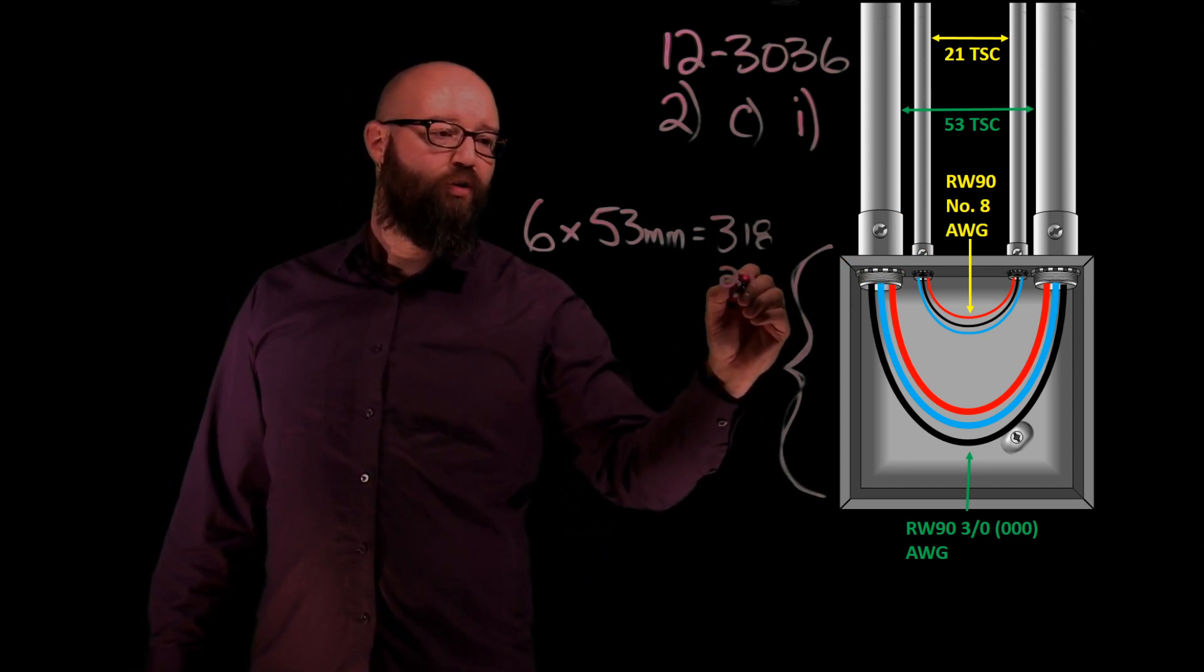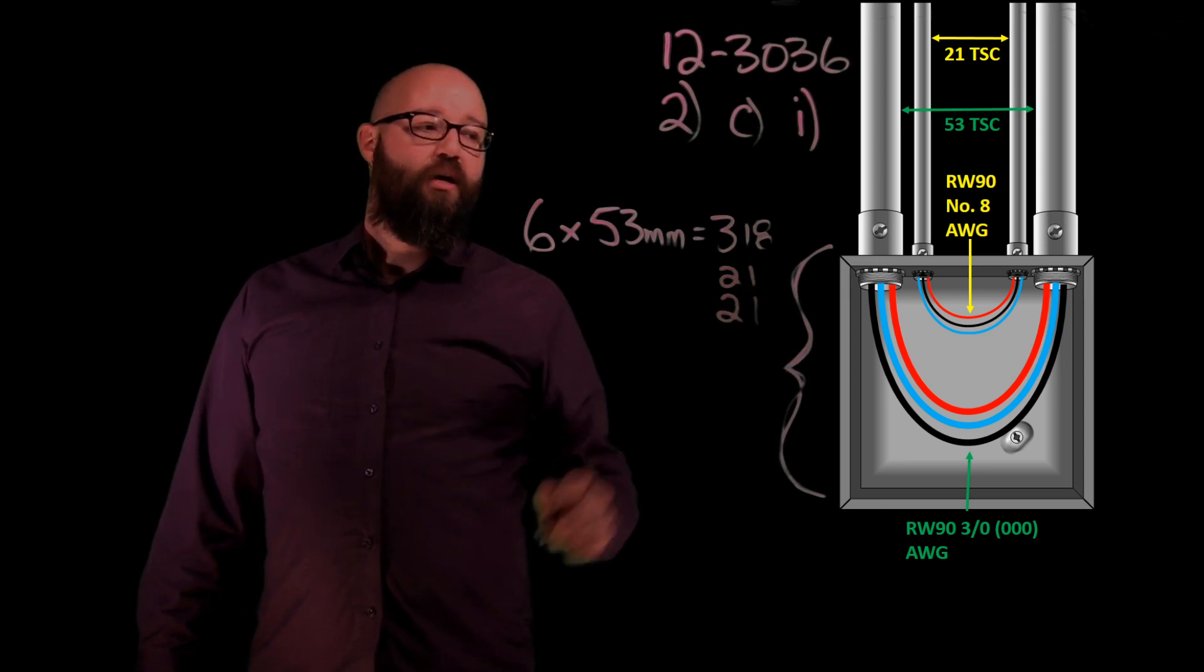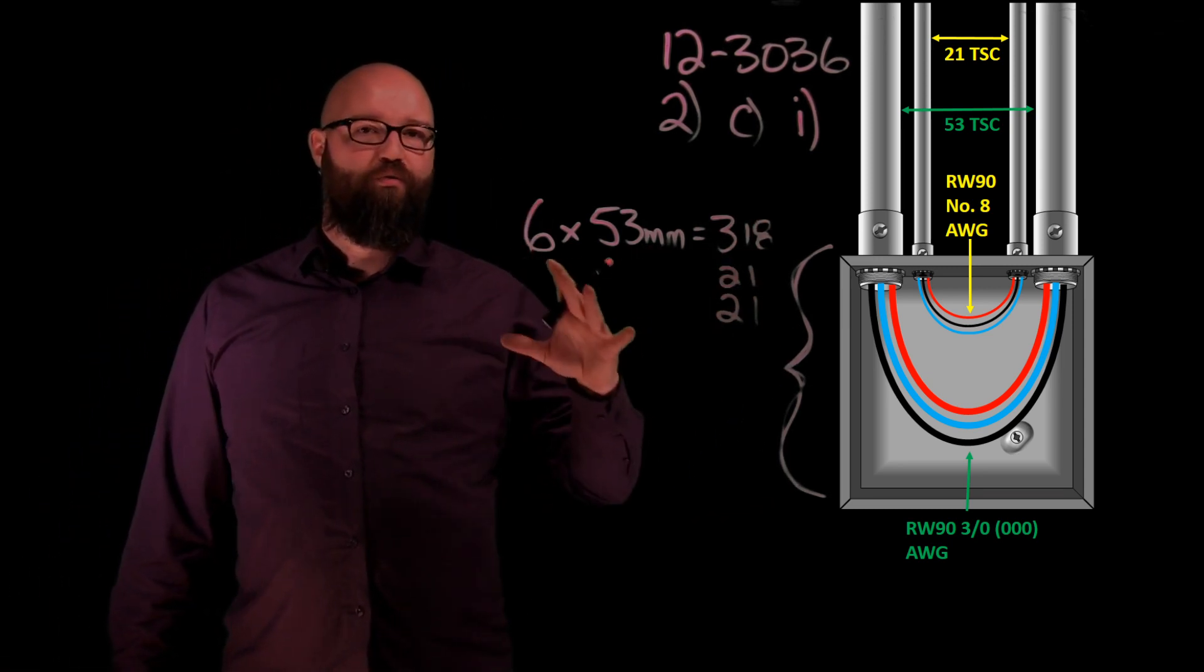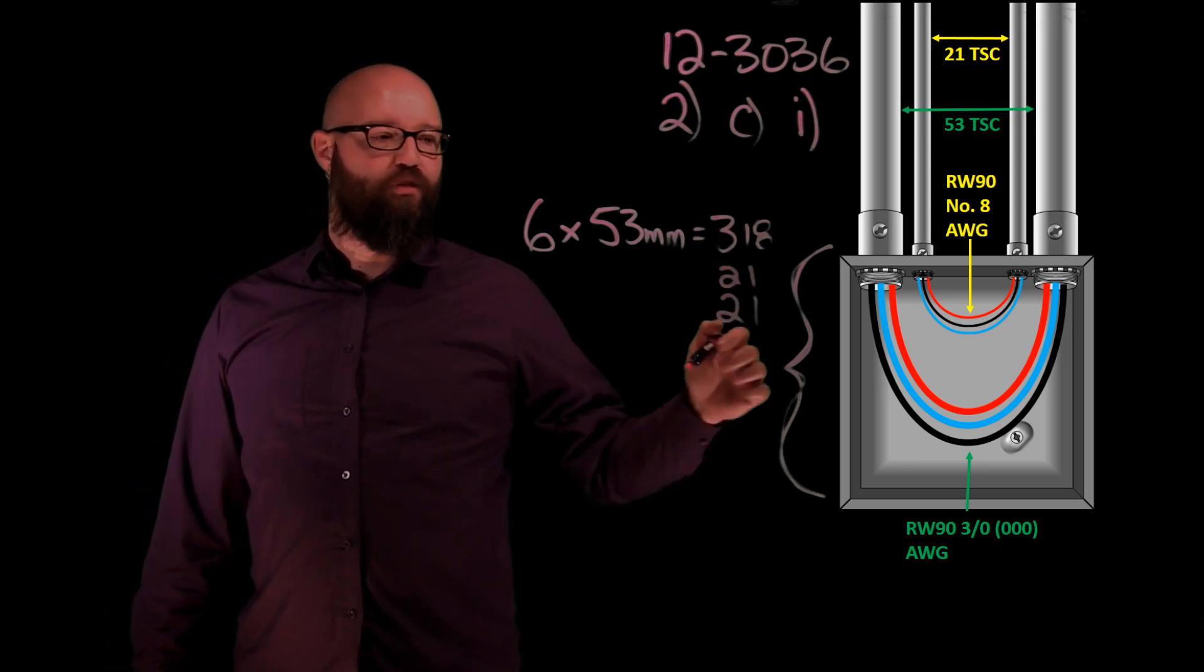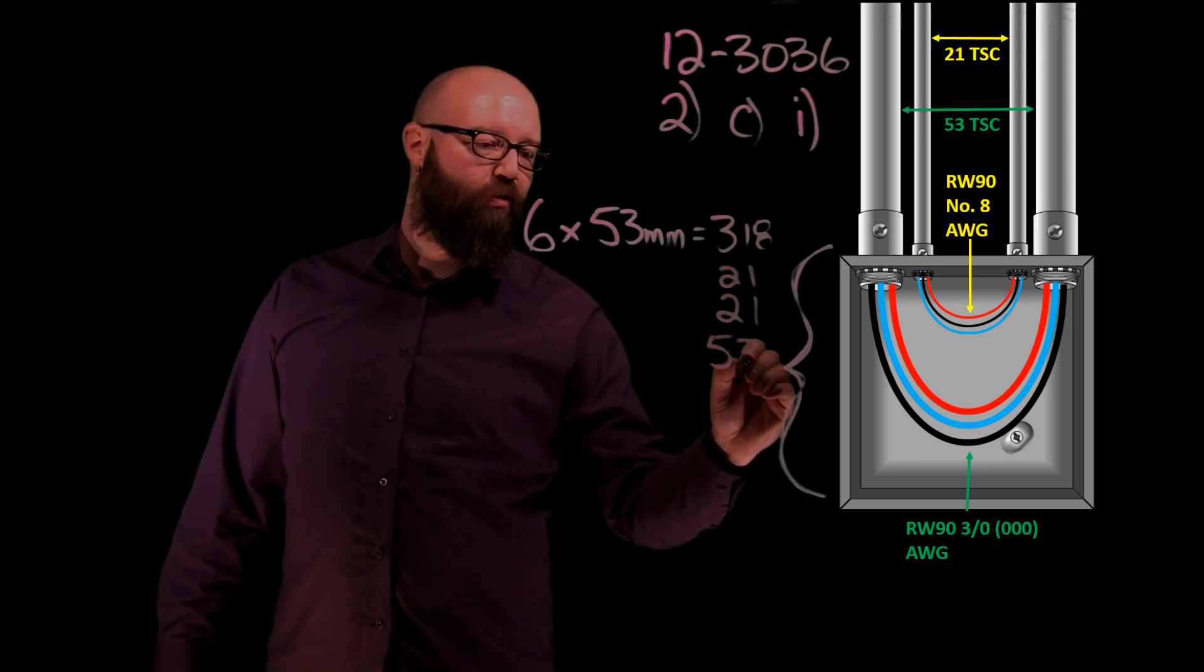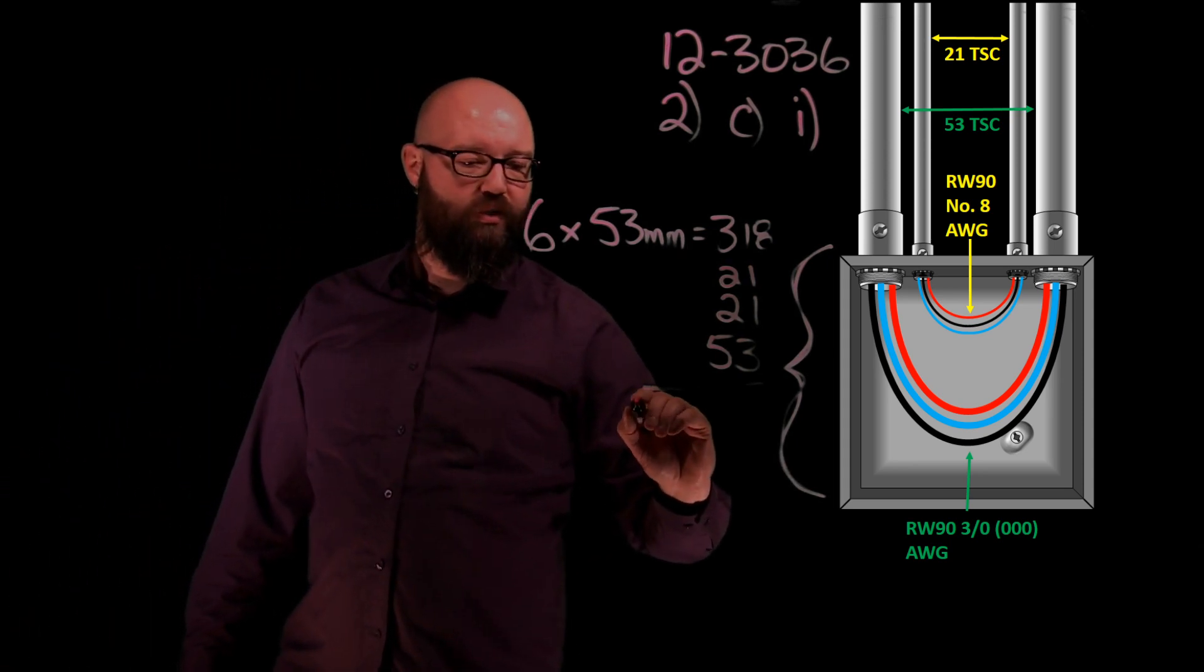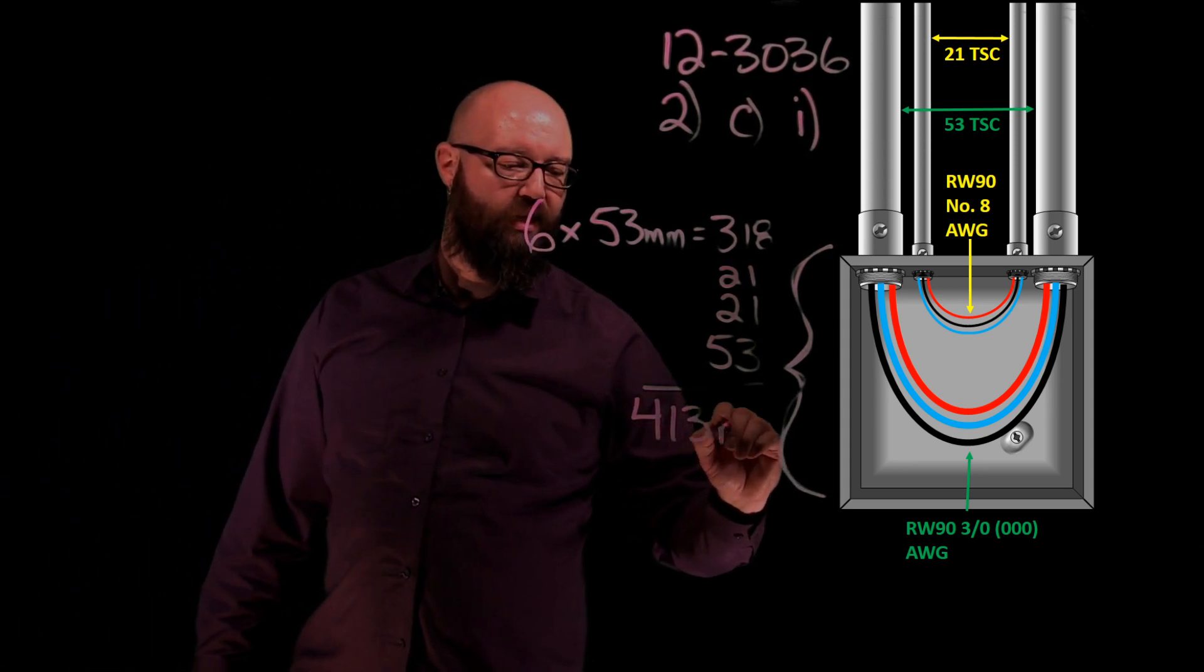So we have our two 21 trade size conduits in there and then we have our other 53 trade size conduits that our three oughts will do that U-turn and make their way into. So we have to add all those in there together. We add those up, we should end up with a total size of 413 millimeters.